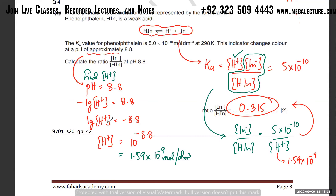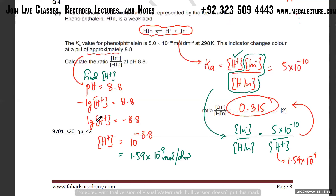Just take the anti-log — how do you remove log? Log expresses values as powers of 10. So if log is applied, it becomes 10 to the power of minus 8.8. Is that clear? Yes, sir. So if you want to take the anti-log of −8.8, it becomes 10^(−8.8).